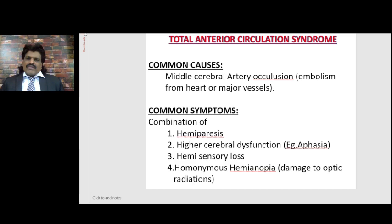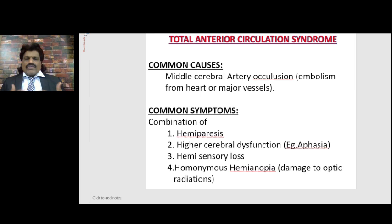Now let's talk about the Total Anterior Circulation Syndrome. The common cause is Middle Cerebral Artery occlusion, which could be because of embolism from the heart or major vessels. The common symptoms are a combination of hemiparesis — because the middle cerebral artery is involved, the frontal lobe gets involved, so the corticospinal tract gets affected — and higher cerebral dysfunction, including aphasia.